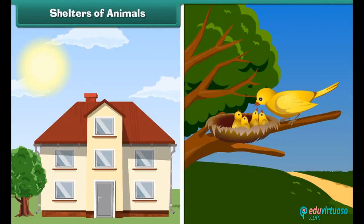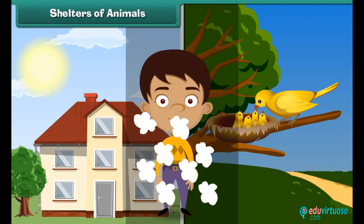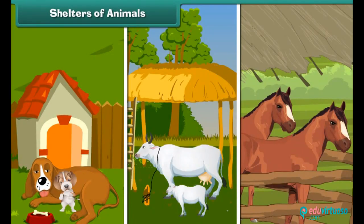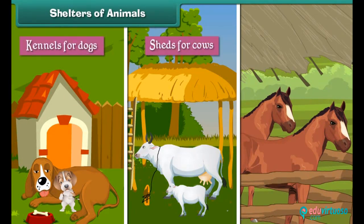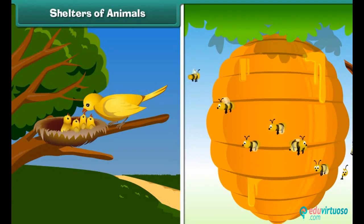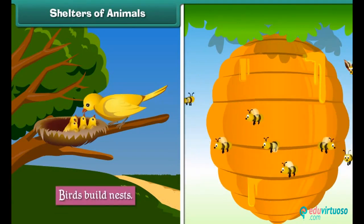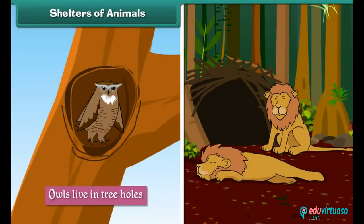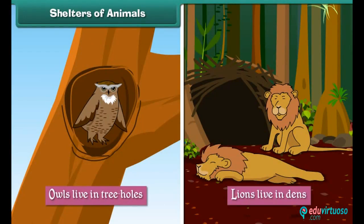Like human beings, animals also have their shelters. Man builds shelters for his tamed animals such as kennels for dogs, sheds for cows and stables for horses. Other animals build or find shelters for themselves. Birds build nests, bees make beehives, owls live in tree holes, and lions live in dens.